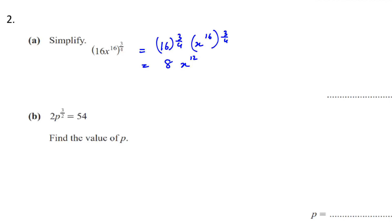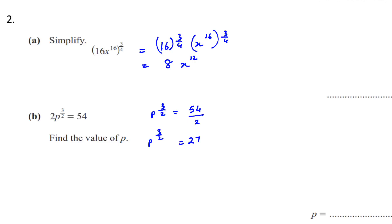Moving on to part B: 2 times p to the power of 3 over 2 is equal to 54. Find the value of p. Always remove the number in front of the base first — since 2 is multiplied, bring it to the other side as division. So p to the power of 3 over 2 is equal to 27. To make p the subject, flip the power to 2 over 3. Putting 27 to the power of 2 over 3 in the calculator gives 9. So p is equal to 9.